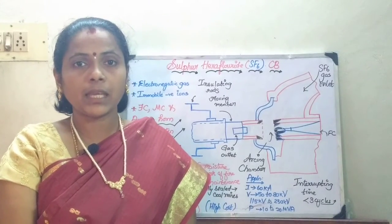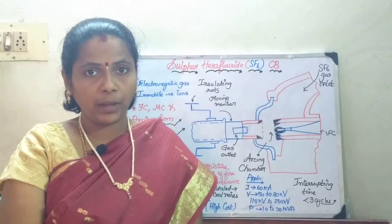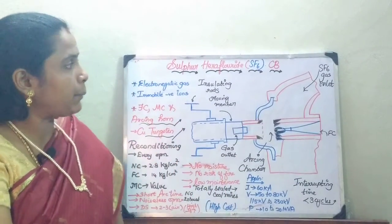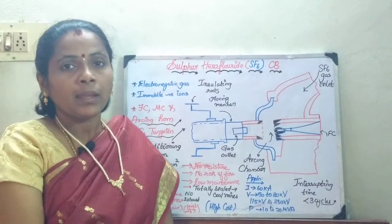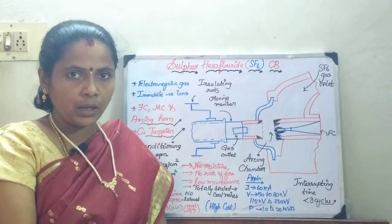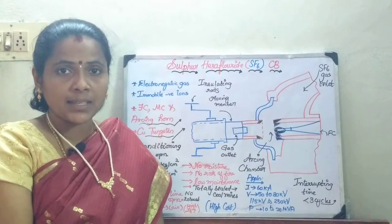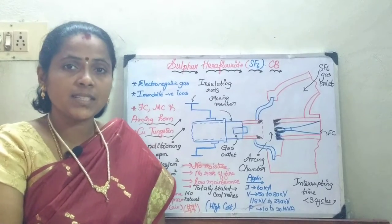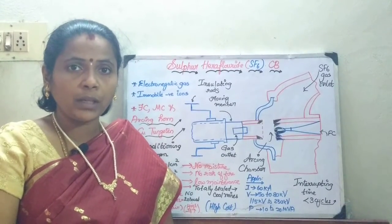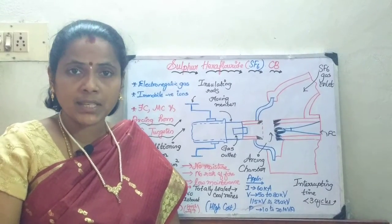In today's session we will be seeing about the sulfur hexafluoride circuit breaker. In the last session we have seen about the air blast circuit breaker. In case of the air blast circuit breaker, though it is used for frequent operations and was able to quench the arc at a faster rate, the disadvantage is it has inferior arc extinguishing property and it requires a compressor plant maintenance.